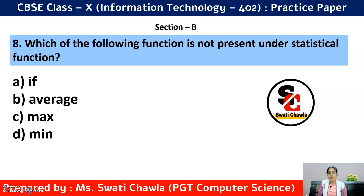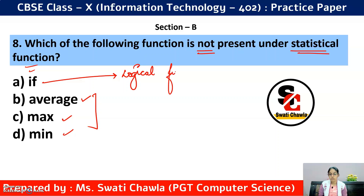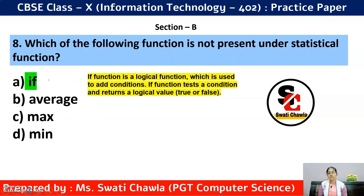Question 8: Which of the following functions is NOT present under the statistical function category? Average, MAX, and MIN come under statistical functions. IF is a logical function. So the correct answer is option A — IF. The IF function is a logical function used to add conditions; it tests a condition and returns true or false.